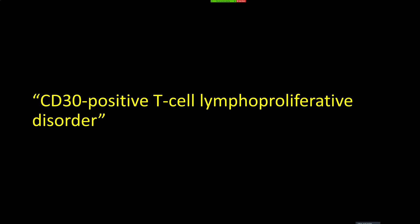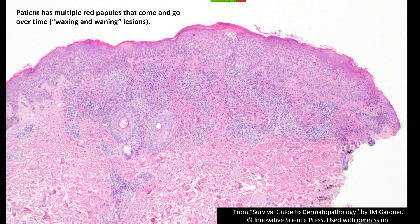So here's case one: the patient has multiple red papules, kind of juicy and edematous, and they come and go over time — waxing and waning. As dermatology residents, you know this is the classic buzzword description for lymphomatoid papulosis: these crops of papules that come and go over time.